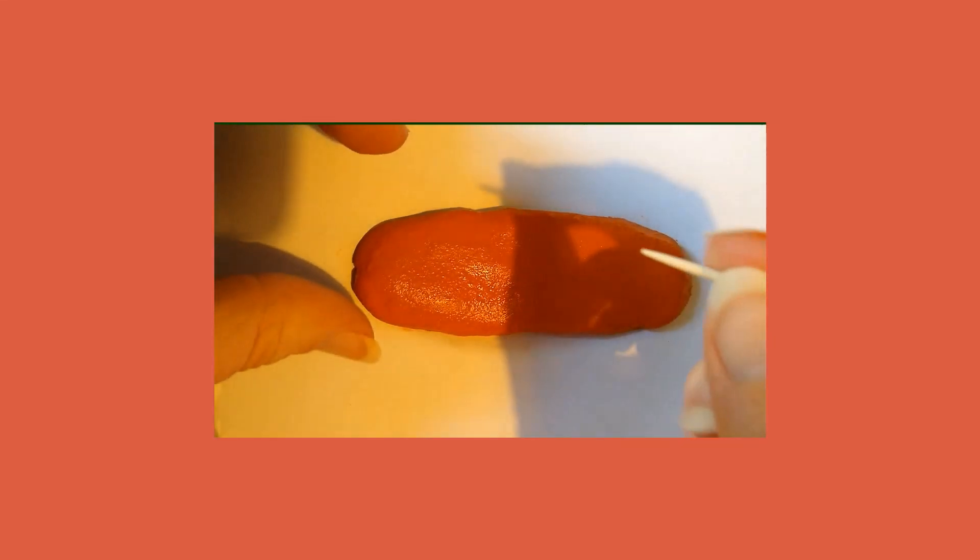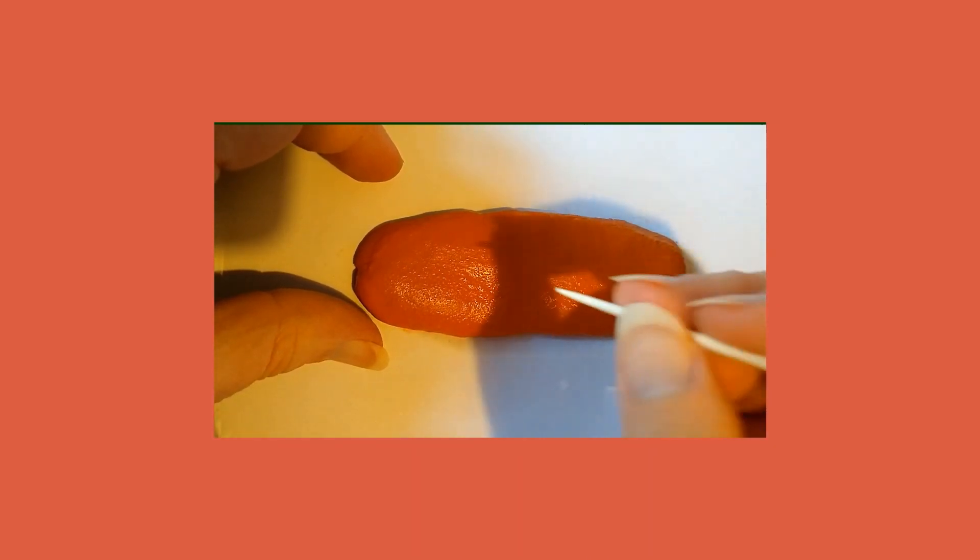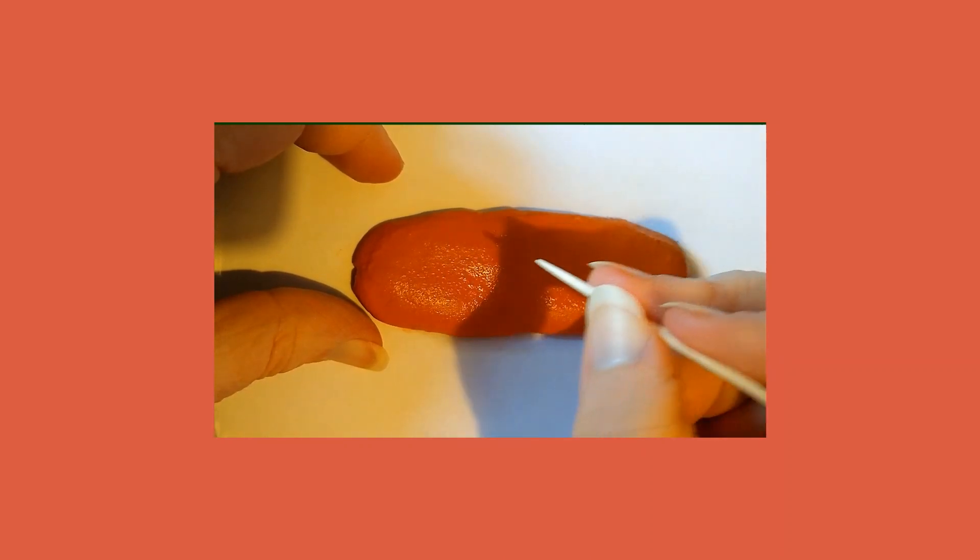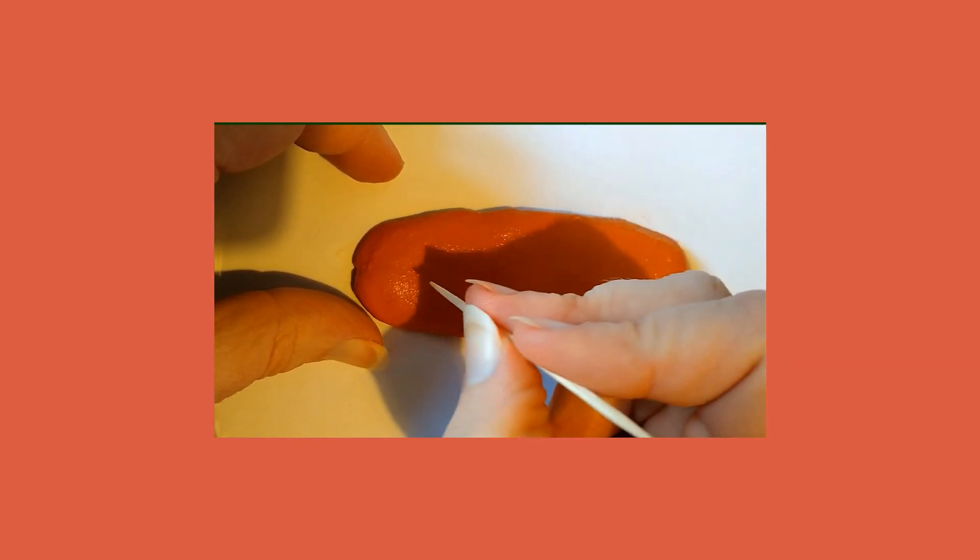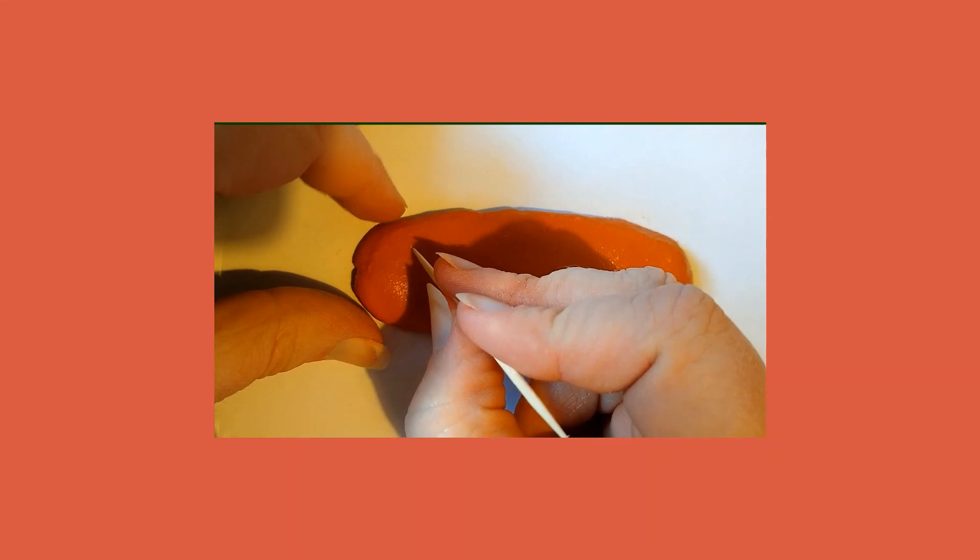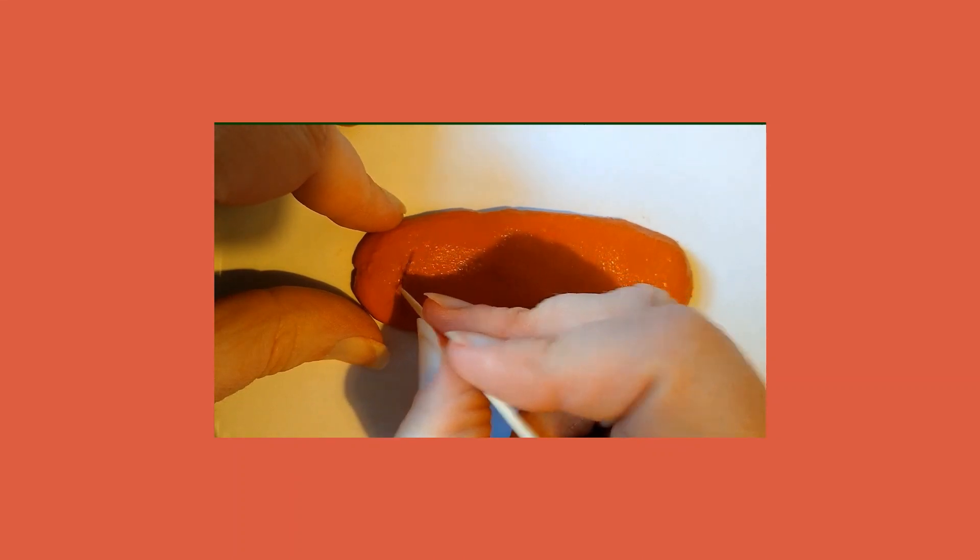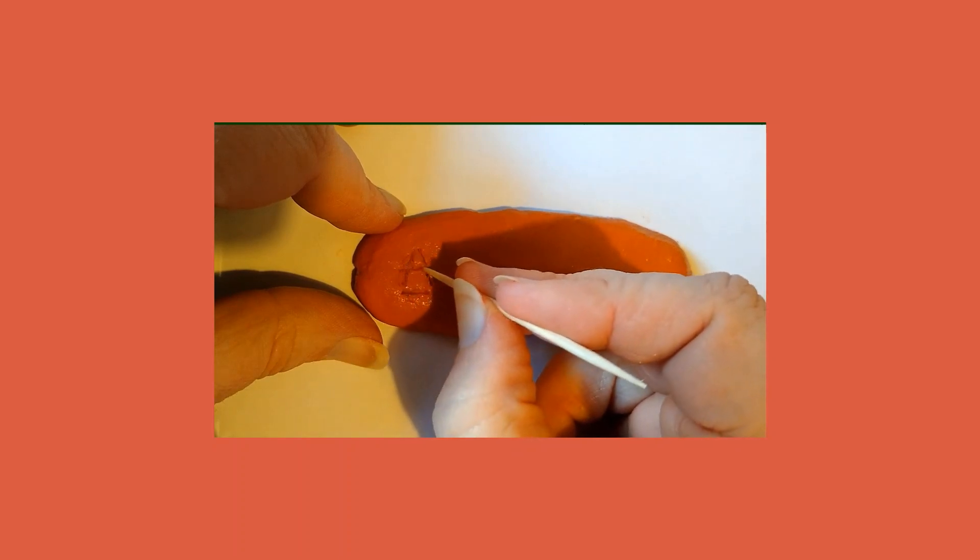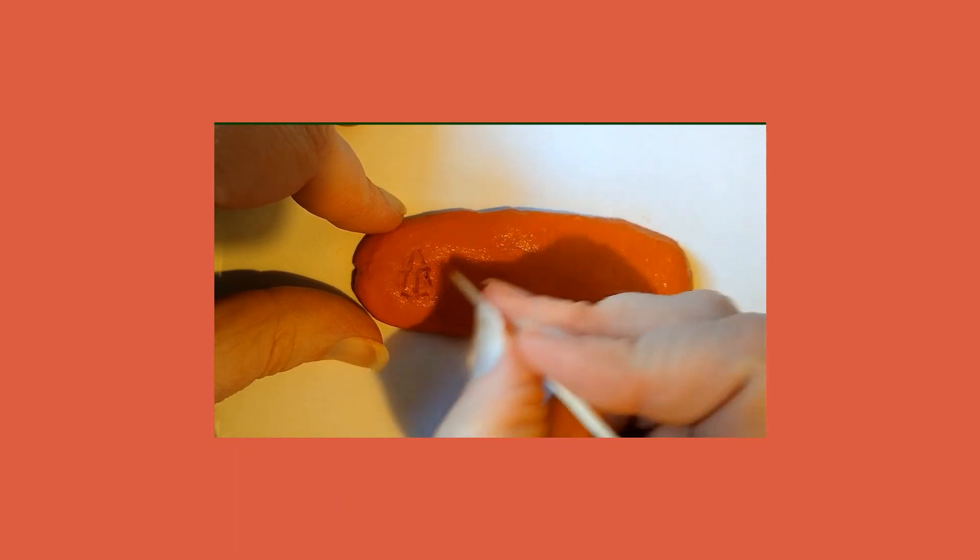You can see that I've made the surface of the tablet quite moist. That's so that I can draw on it more easily. Okay, so I'm going to start by writing my name, Pippa. So I need the sign for Pi, and then the sign for Pa.